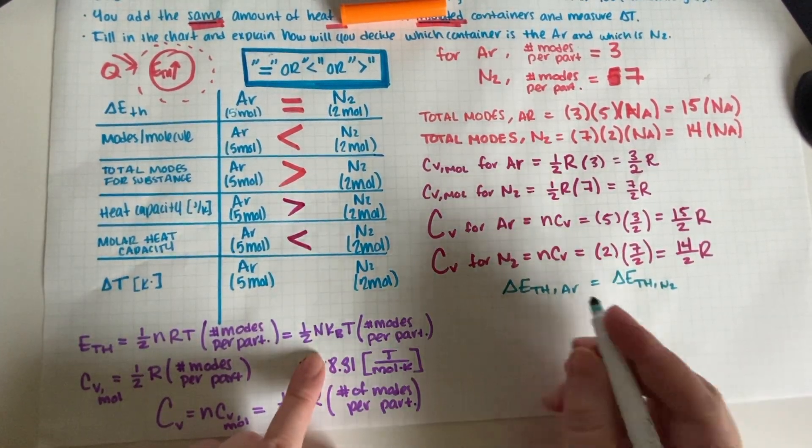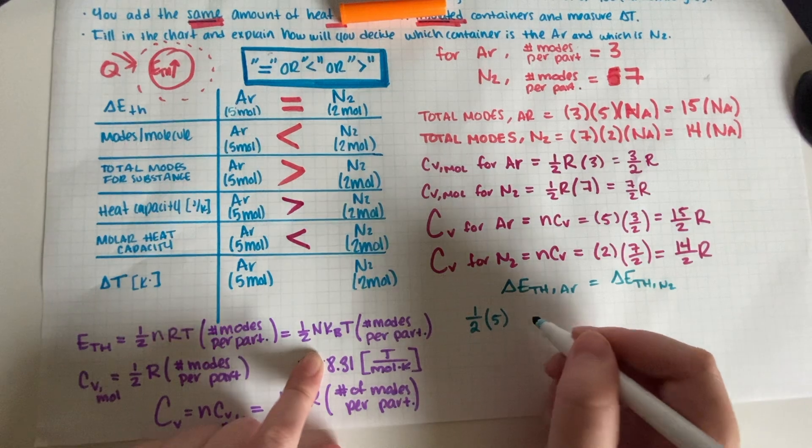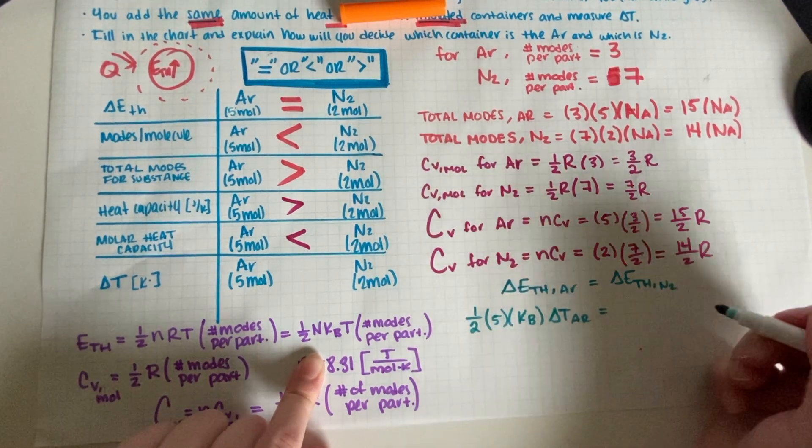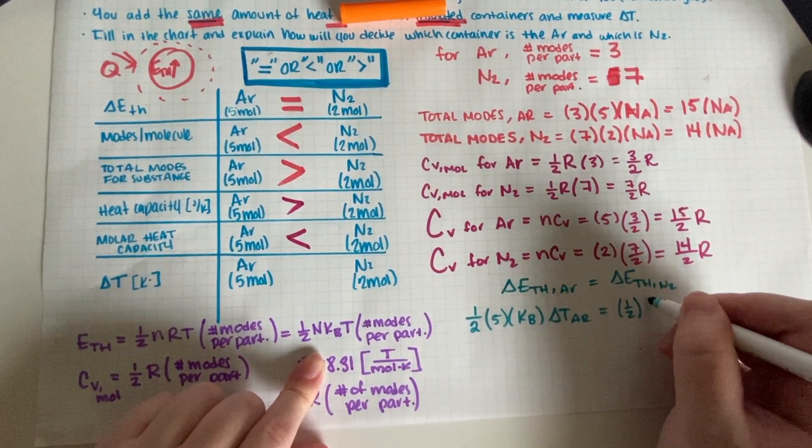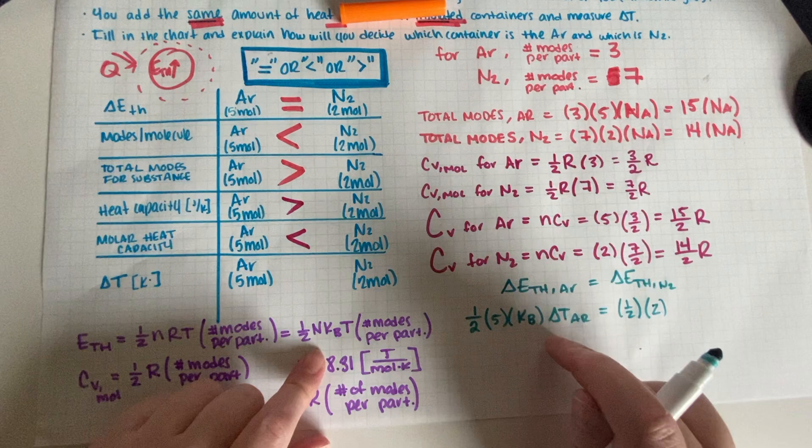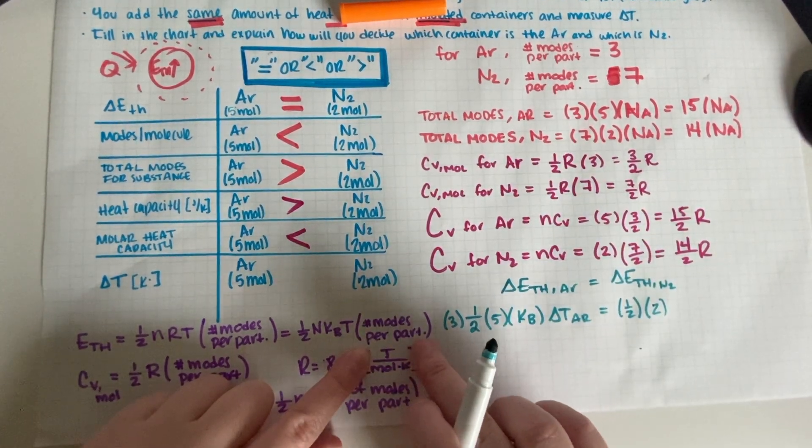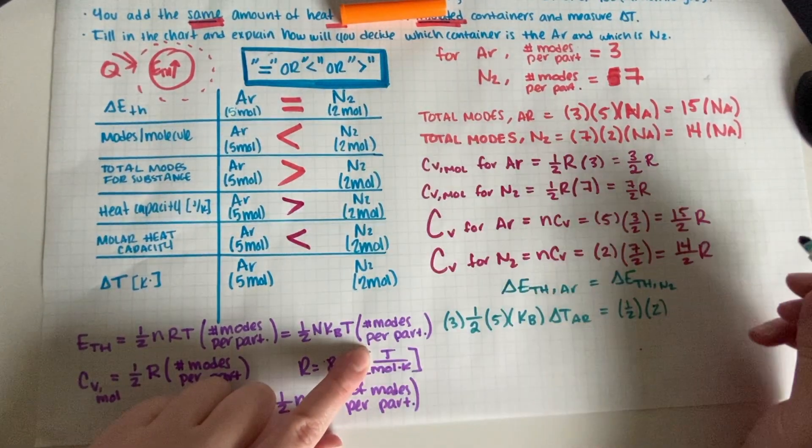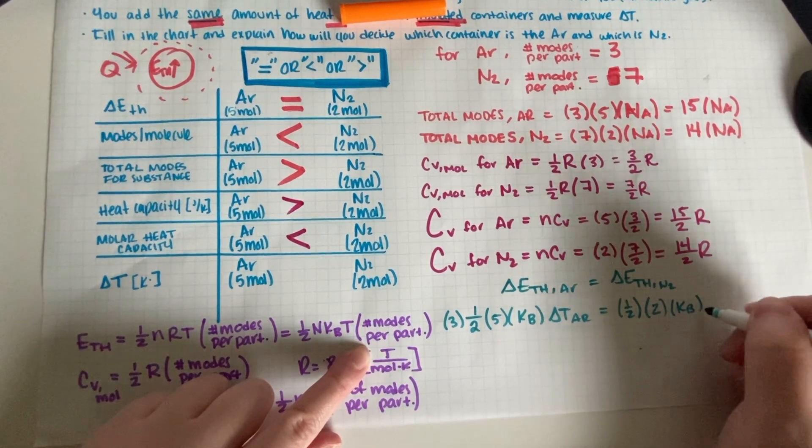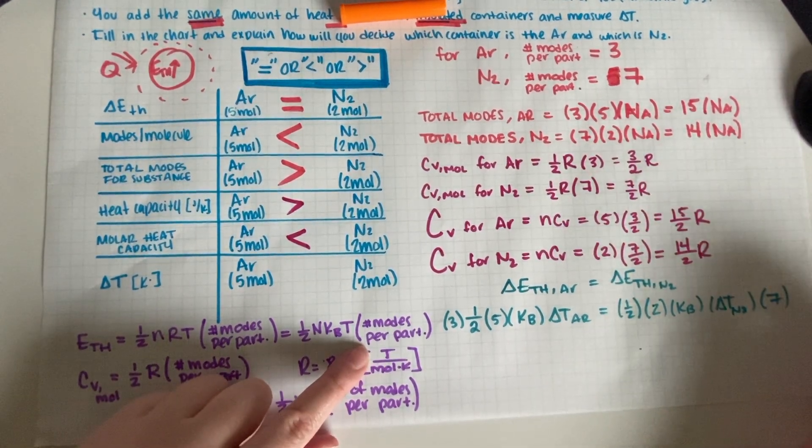So this is one half, argon is equal to five moles times three kb delta t Ar is equal to one half, then number of moles for the other one is two kb and then your delta t N2, and then your number I'm using seven, so we're going with seven.